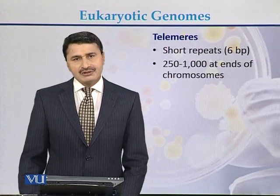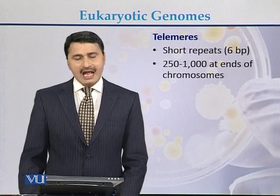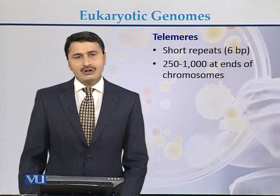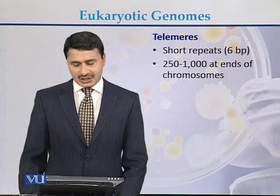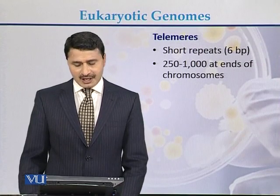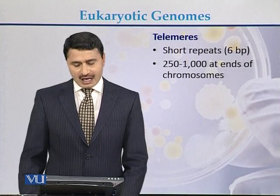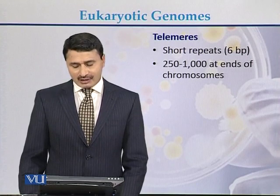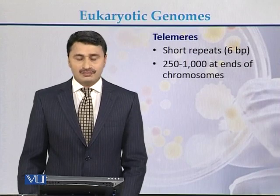Repetitive sequences in eukaryotic genomes are also present at the telomeres. In case of telomeres, there are short repeats up to 600 base pairs, and they occur from 2–50 up to 1,000 times at the ends of the chromosome.